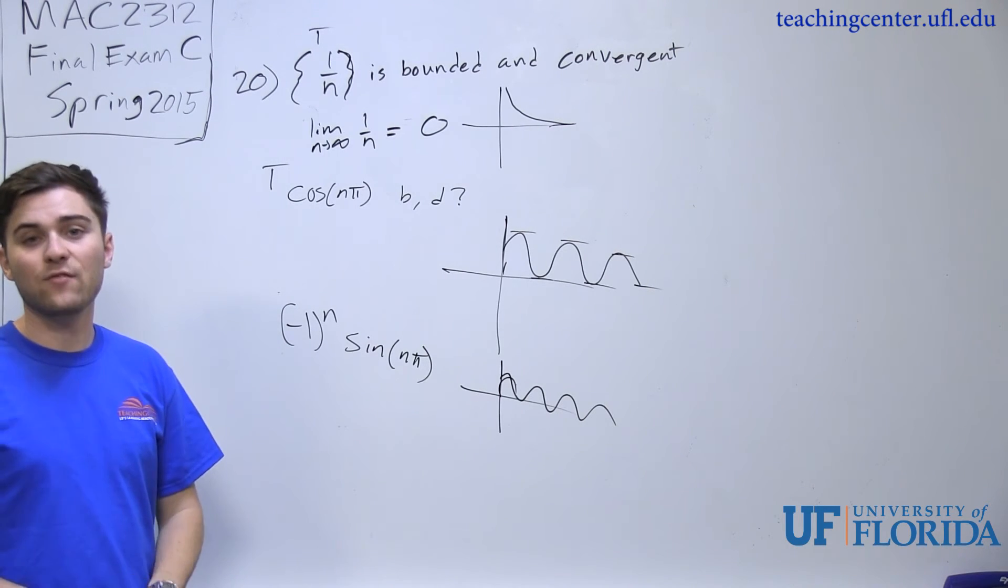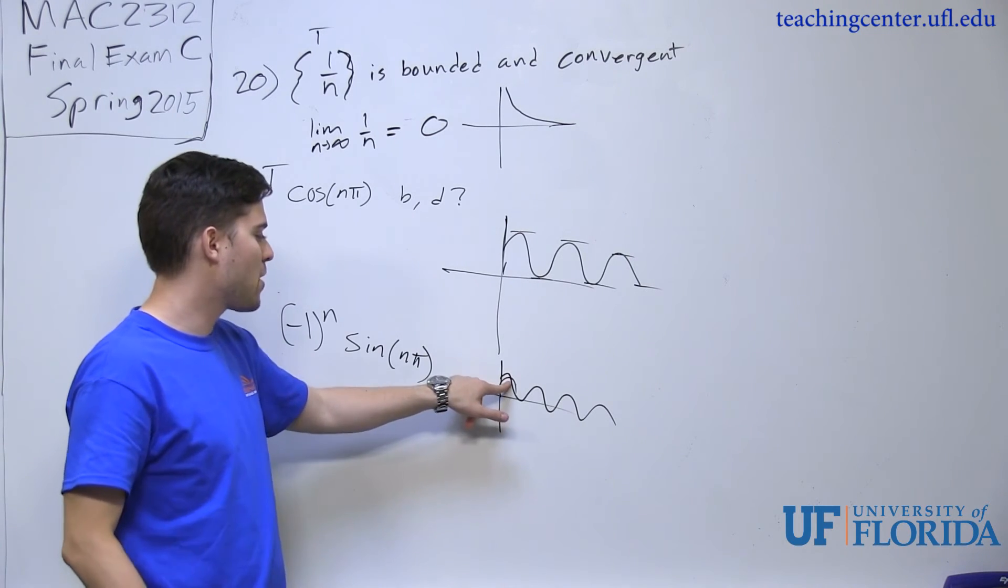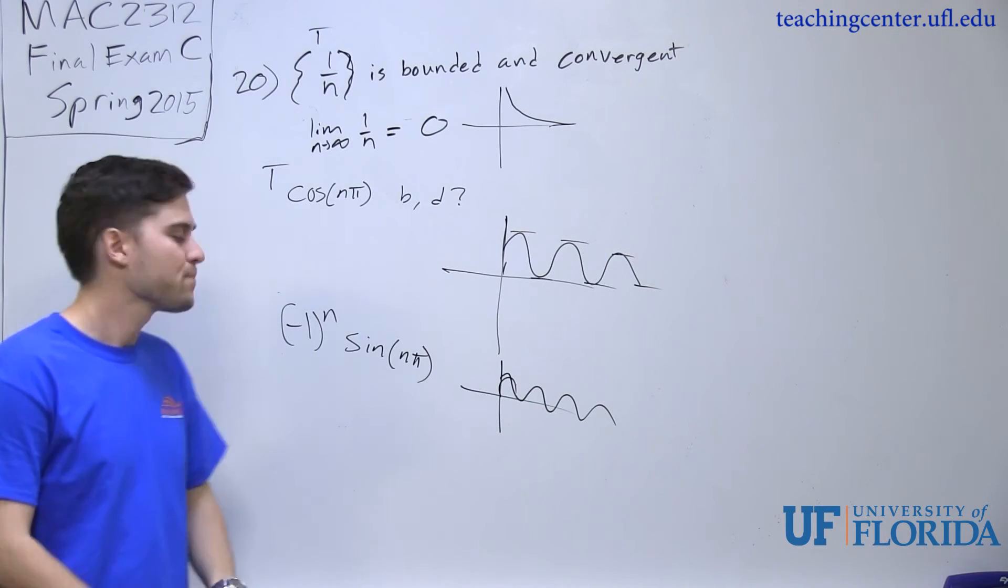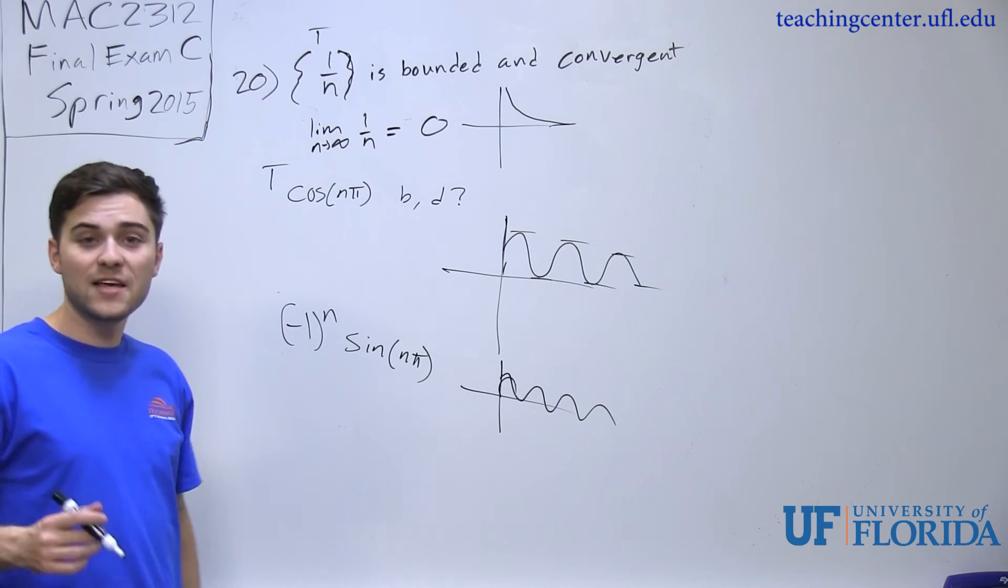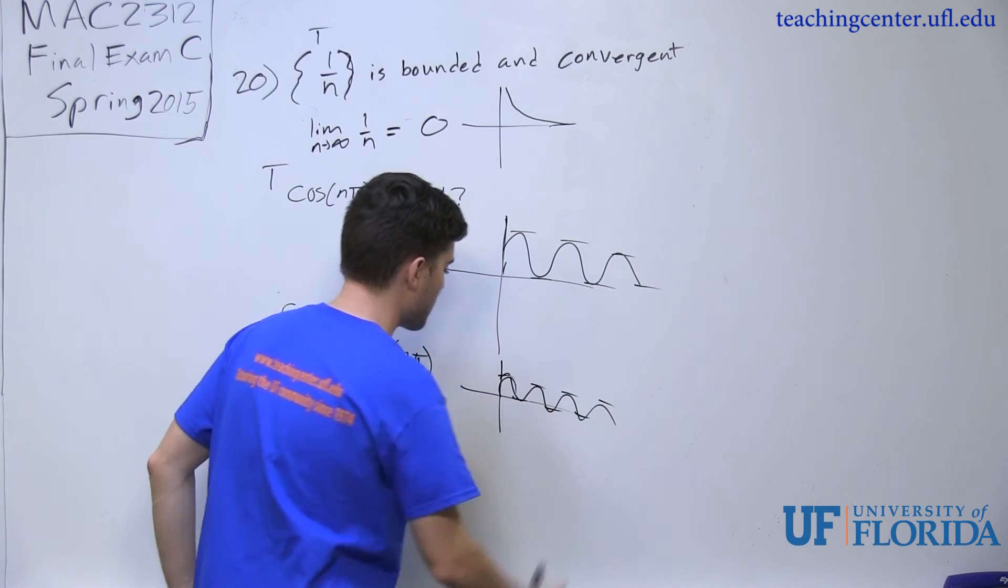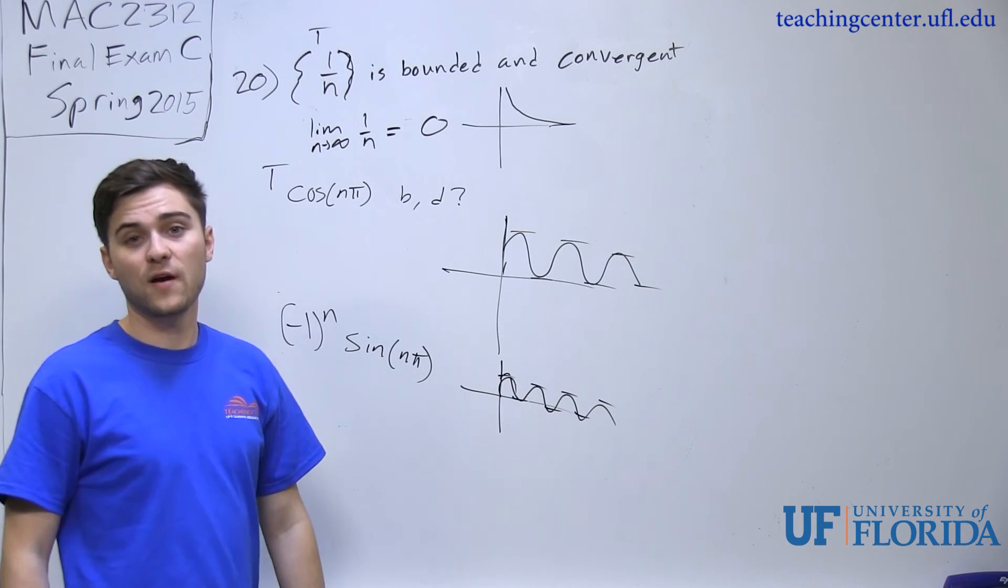And when multiplied by negative 1 to the n, all that is going to do is that is going to shift it in the opposite direction. So instead of having a positive here, it would probably be negative here. Instead of having a negative here, it would be positive. So in this case, it is bounded because it is still a sine wave.